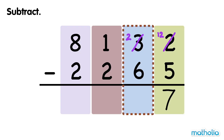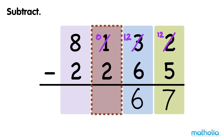Subtract the tens. We cannot subtract 6 tens from 2 tens, so we regroup 100 into 10 tens. Now we have 0 hundreds and 12 tens. 12 tens minus 6 tens equals 6 tens. Subtract the hundreds. We cannot subtract 2 hundreds from 0 hundreds, so we regroup 1,000 into 10 hundreds. Now we have 7 thousands and 10 hundreds. 10 hundreds minus 2 hundreds equals 8 hundreds.